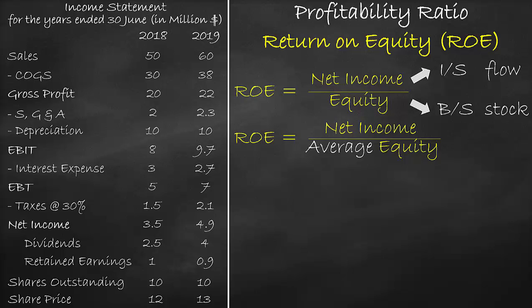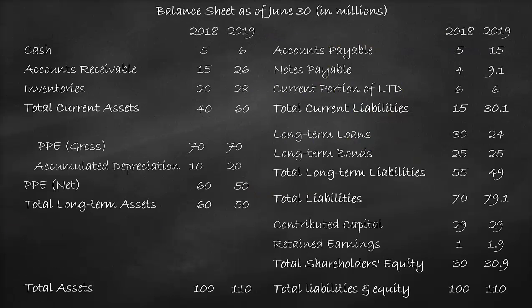Let's calculate ROE for the year 2018. Net income is equal to $3.5 million. Looking at the balance sheet item for equity — please note that 2018 is the first year of operations, therefore we do not take the average of equity because we do not have the previous year. We have equity in 2018 of $30 million.